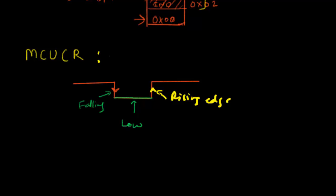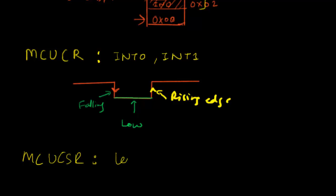This MCUCR configuration applies to interrupt 0 and interrupt 1. For INT2 there is a separate register called MCUCSR (MCU Control and Status Register) with a similar configuration. One important difference: INT0 and INT1 support both edge-triggered and level-triggered modes, whereas INT2 configured via MCUCSR is only a low-level triggered interrupt — it cannot be configured for rising or falling edges.